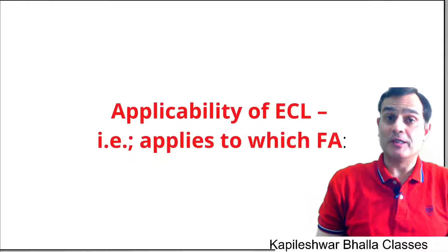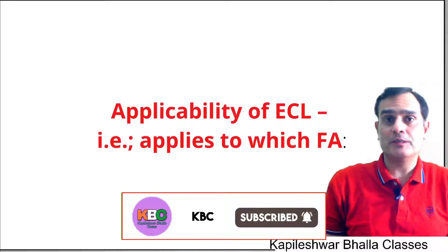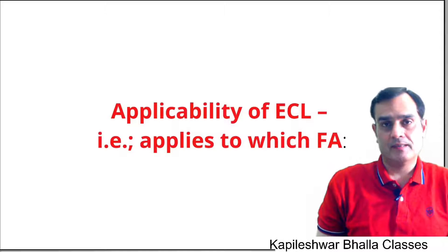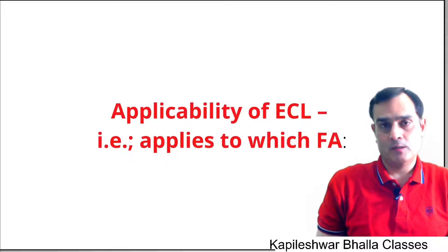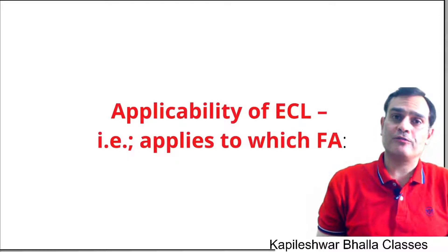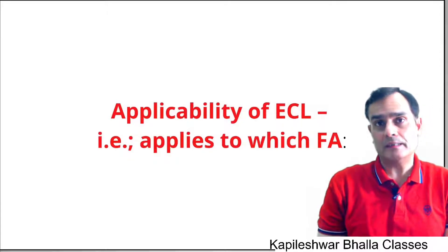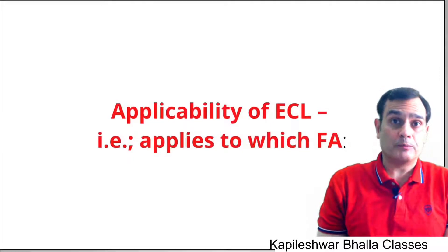Good morning friends. I started in the last video a series on the ECL model — the Expected Credit Loss model — given in Ind AS 109. I also told you that we're going to cover a three-step procedure for impairment testing of financial assets. Before getting to the three-step model, the first thing I said was looking at what approach would apply to a given financial asset. There are three approaches: the general approach, the simplified approach, and the POCI.